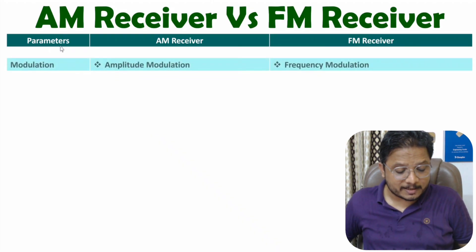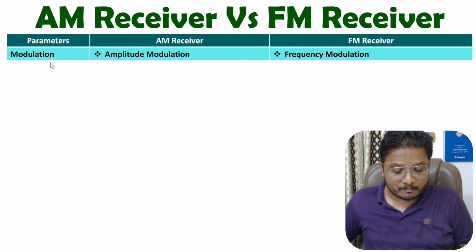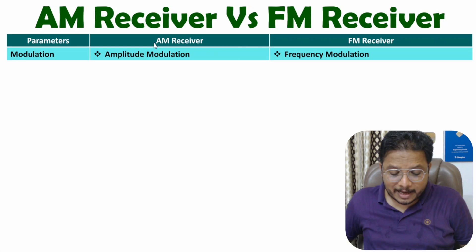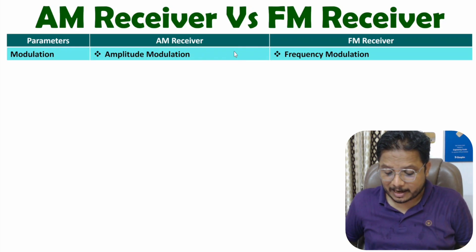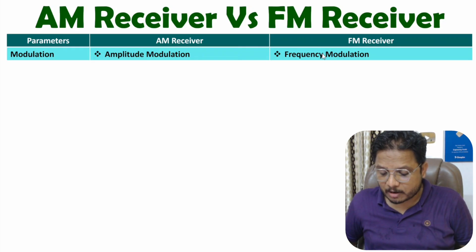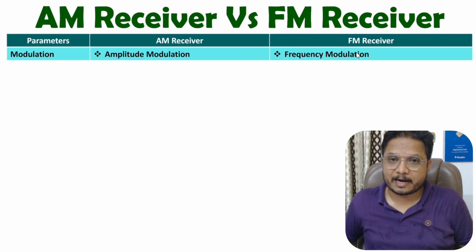The first parameter is modulation. From the name itself you can understand this — AM means amplitude modulation and FM means frequency modulation.